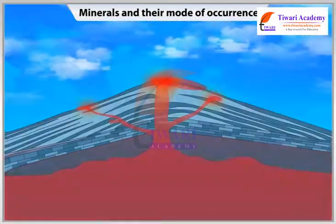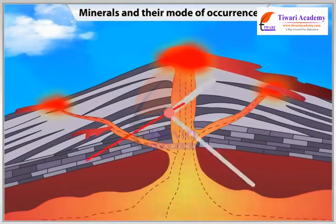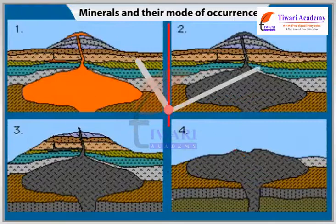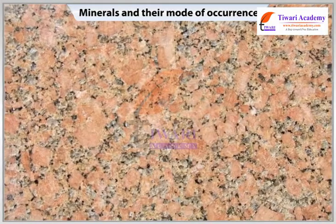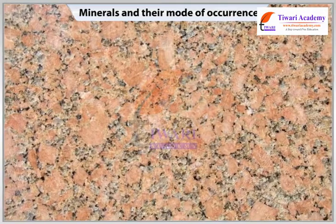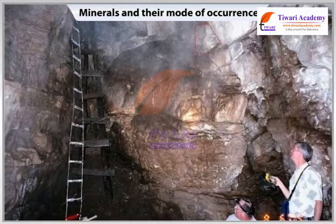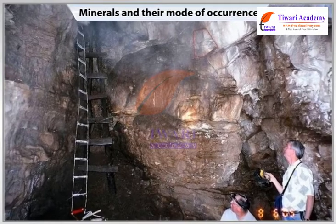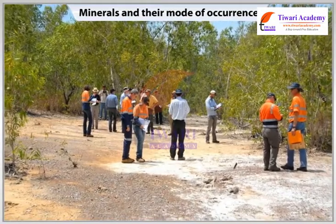Granite arises by the consolidation of a molten magma at high temperatures and great pressures. The type of formation of a mineral helps to determine the cost of its extraction. It is therefore important for us to understand the main types of formation in which minerals occur.